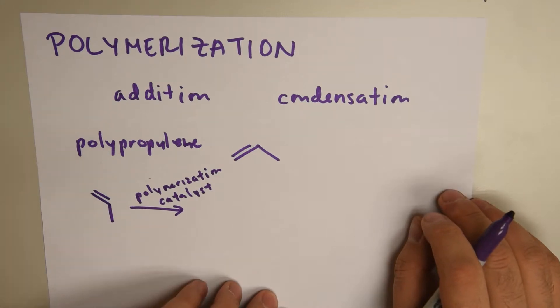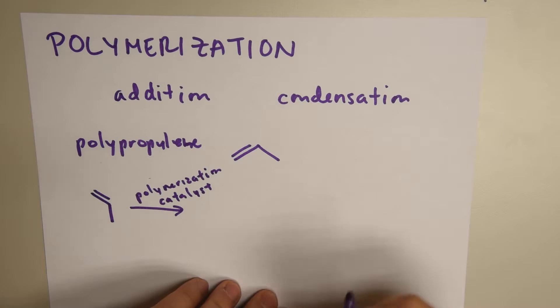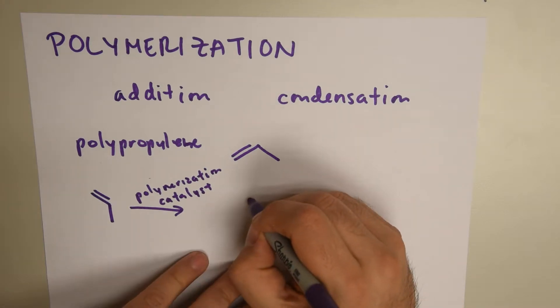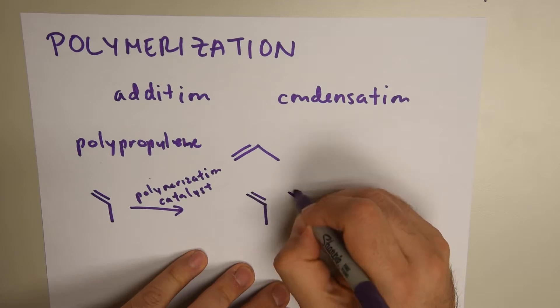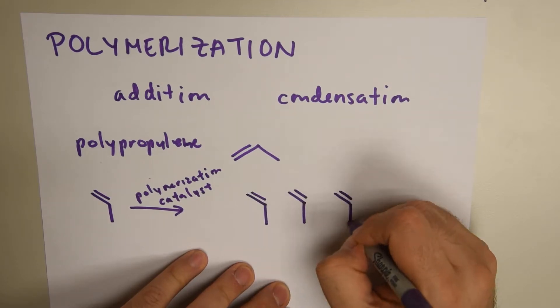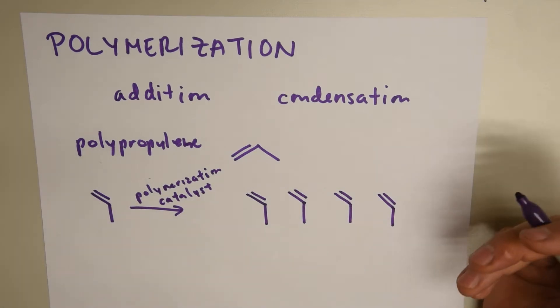Remember, like in all reactions, the action occurs at the functional group, in this case a double bond. So, I'm going to draw in two steps. I'm going to draw the repeating units that are going to come together. And what's going to happen when the reaction occurs, what's being broken is a double bond.